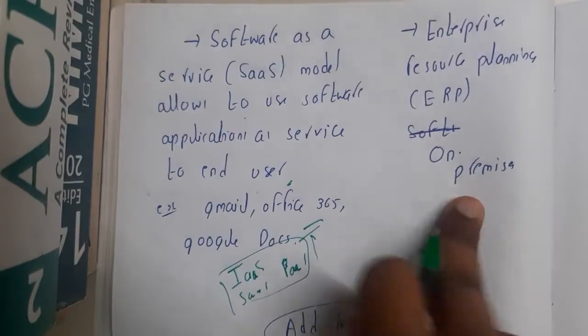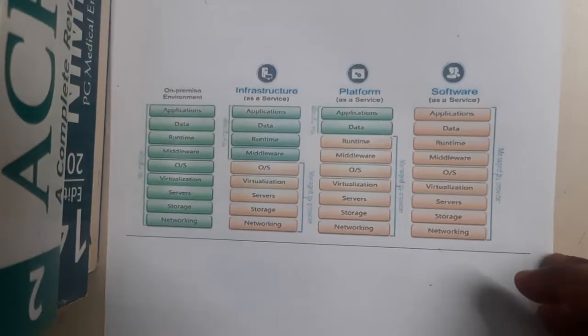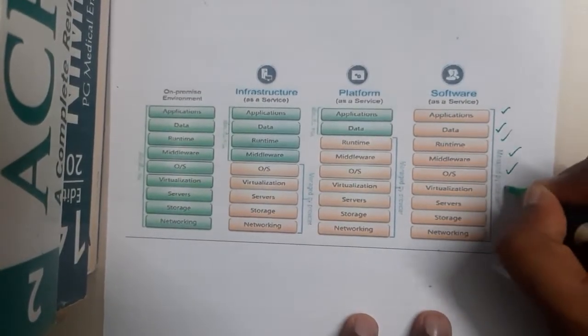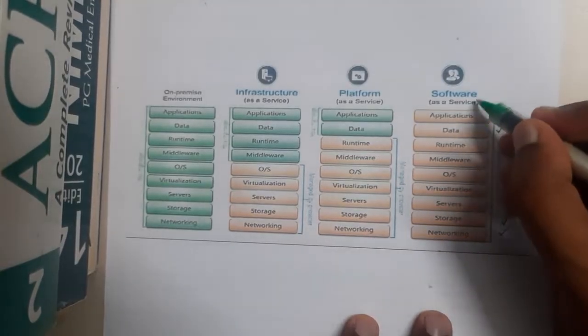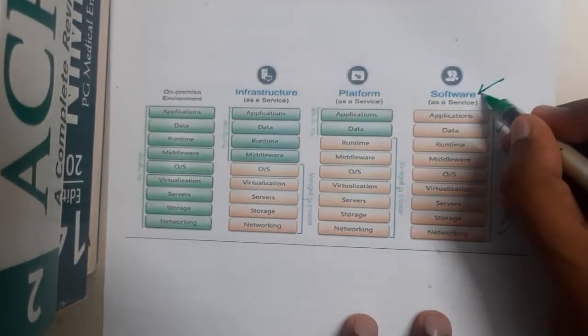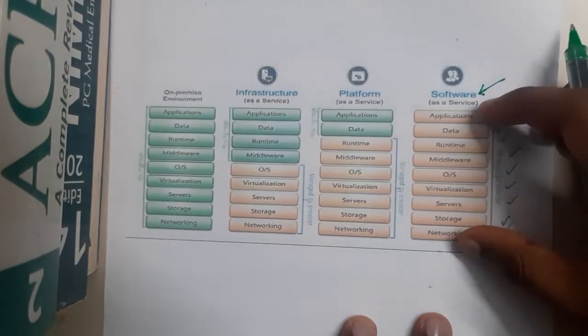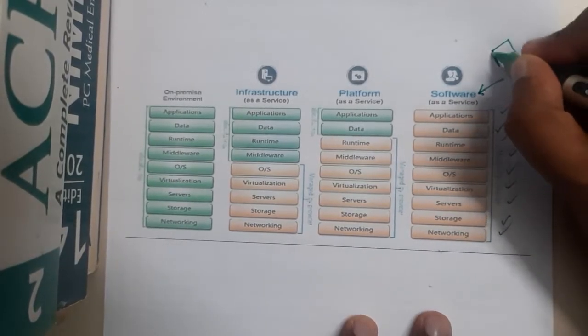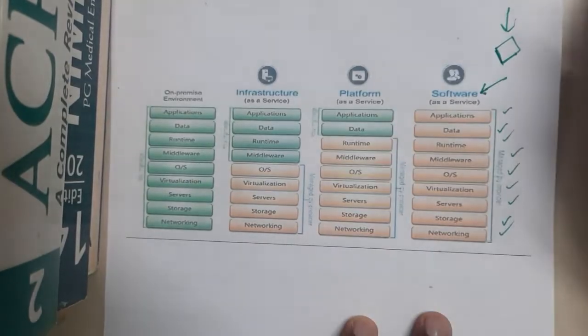You can draw the diagrams in this way. The first layer is application, data, runtime, middleware, operating system, virtualization, server, storage, and network. In software as a service, you don't have any right to do any changes. You are just going to use the front-end application. That's it. That is software as a service.